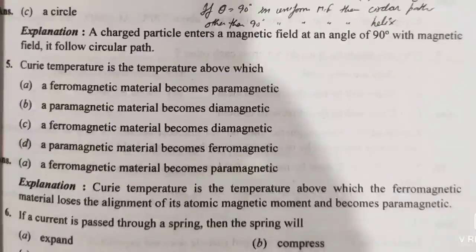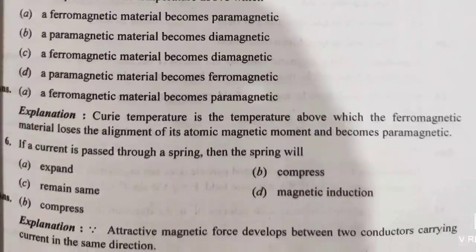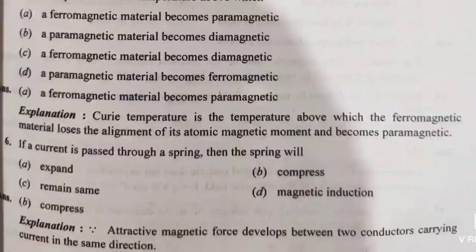The Curie temperature is the temperature above which a ferromagnetic material becomes a paramagnetic material. This is an important and simple definition.